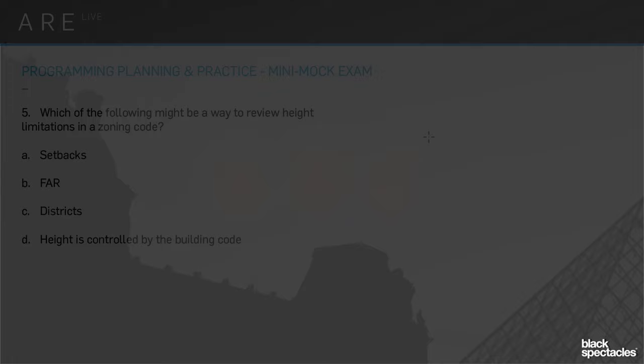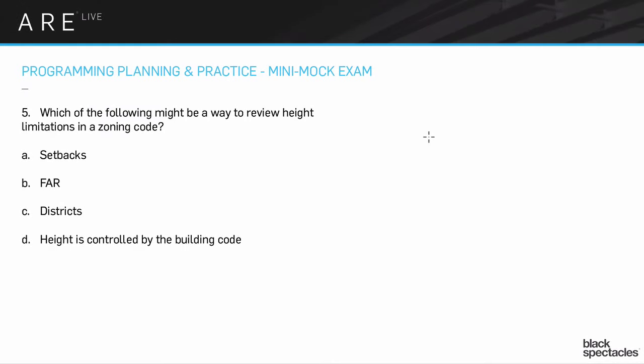Number five, which of the following might be a way to review height limitations in a zoning code? Setbacks, FAR, districts, D, height is controlled by the building code.